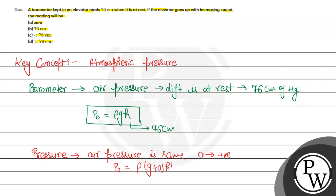Now, if we compare the first case and the second case, in both cases the pressure value P0 is the same. In the second relation, to keep P0 constant as compared to the first case, the effective acceleration due to gravity is increasing. So to keep P0 constant, the height H must decrease.